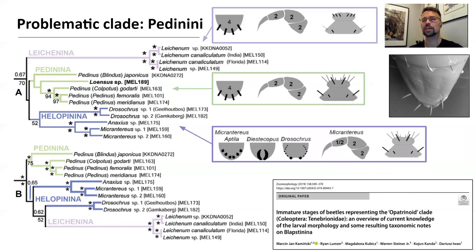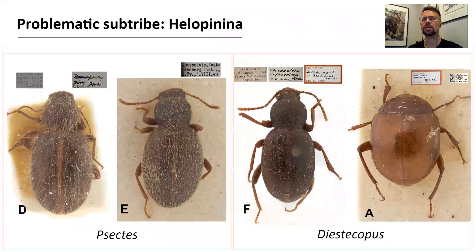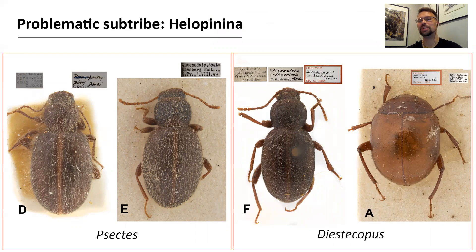There is only one problem: species and sometimes even generic level identifications within the sub-tribes are really challenging. Just take a look at our trees and the ideas we have for Jalapenina. We have a ton of ethanol-preserved specimens that we could potentially add to this phylogeny, but what is the point when we are not able to provide any reliable generic names? Here is a perfect example of how currently defined genera are in need of revision — the majority of generic concepts are based on the number and visibility of elytral rows, which doesn't hold up well. But as they say, there are no disasters, only opportunities.